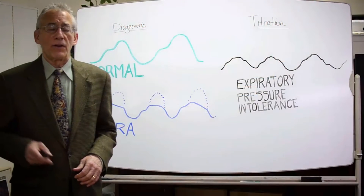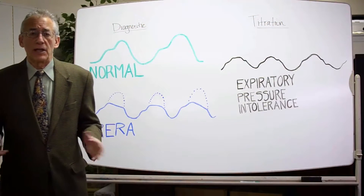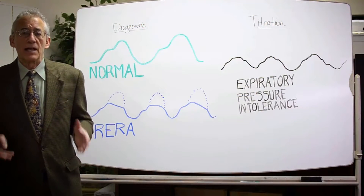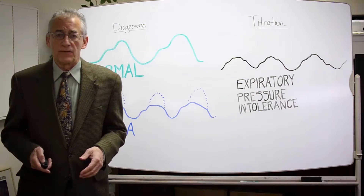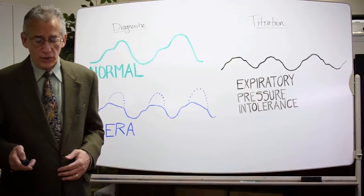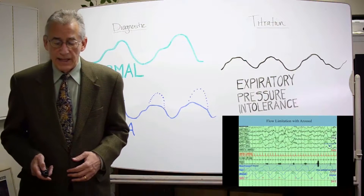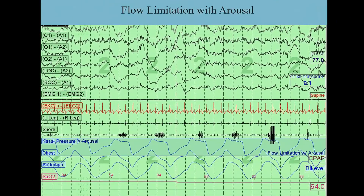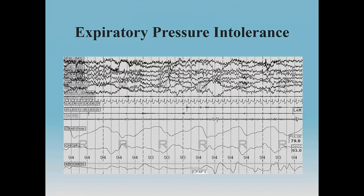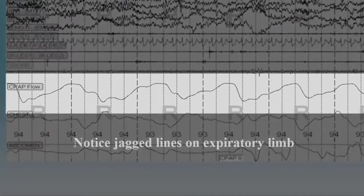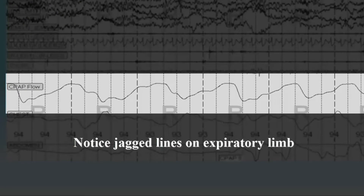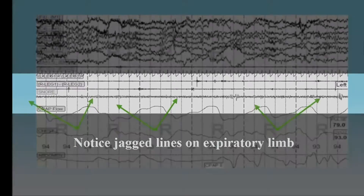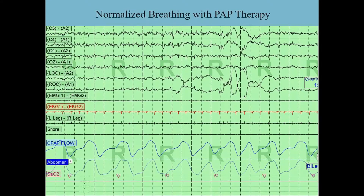Regardless of whether the patient develops central apneas, it's very common for these individuals to develop expiratory pressure intolerance. This is the cardinal process: flow limitations lead to expiratory pressure intolerance when treatment is not going well with PAP therapy. Our goal, obviously, is to normalize the airflow curve.